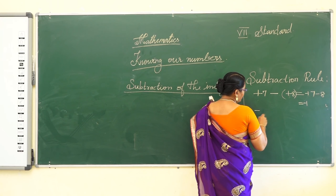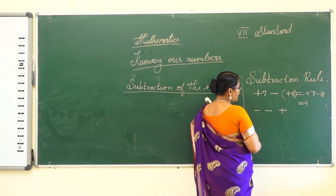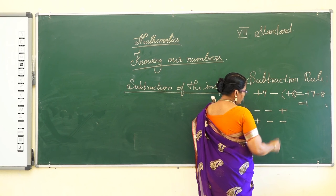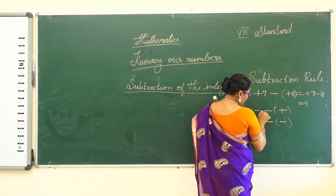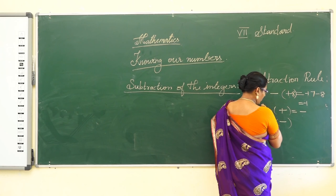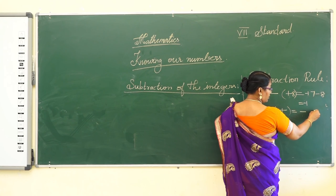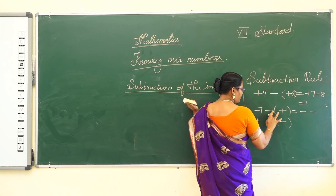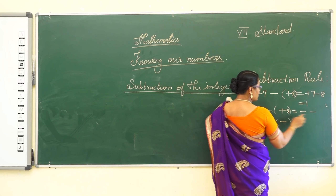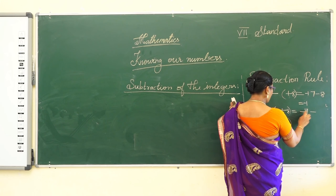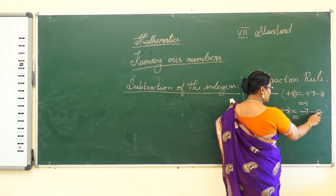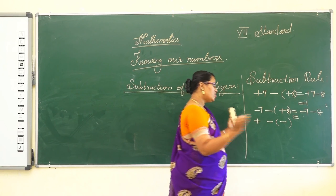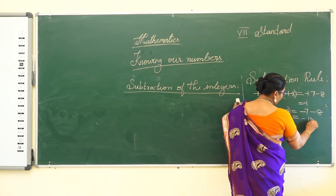Another subtraction case: minus 7 minus (+8). Here minus into plus gives minus, so we have -7 + (-8). Both have the same negative sign, so just add: 7 + 8 = 15, and put the same sign — the answer is -15.